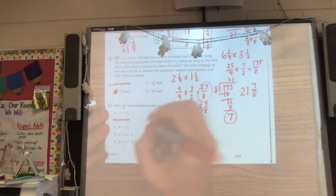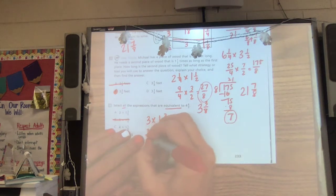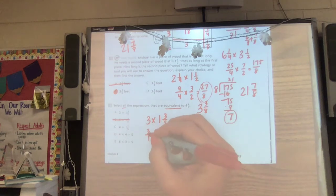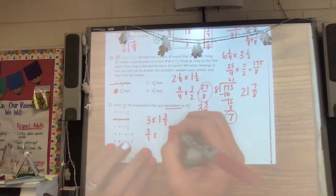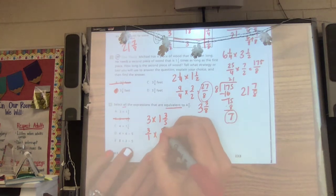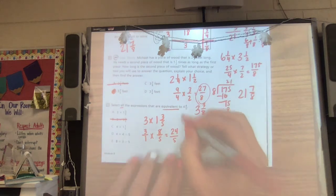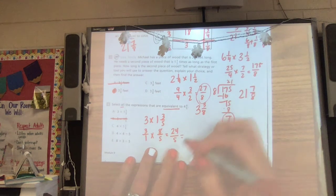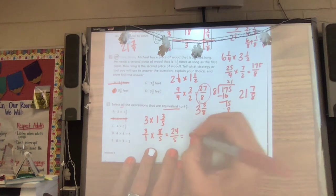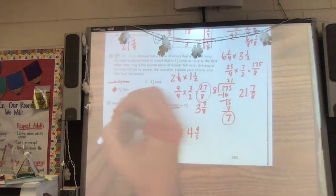Let's just look at three times one and three fifths. We need to make these into fractions. I know that three over one is equivalent to three because three divided by one is still three. And one and three fifths, five times one is five, six, seven, eight fifths. That gives me 24 fifths. Let's see if that's equivalent to four and four fifths. Five can go into 24 four times. And I have four fifths, so that one works.